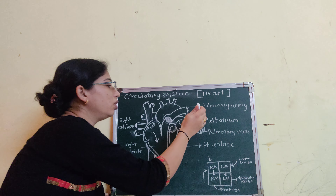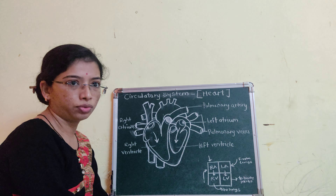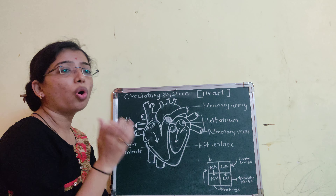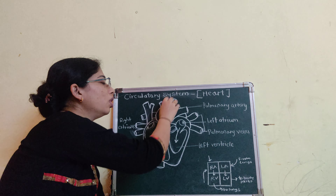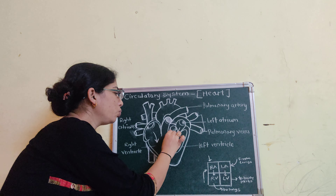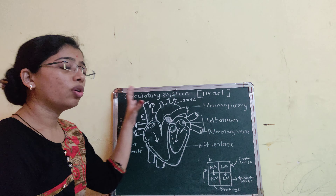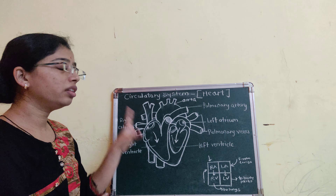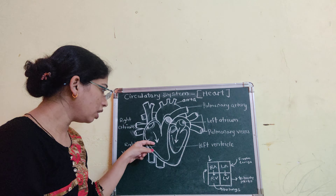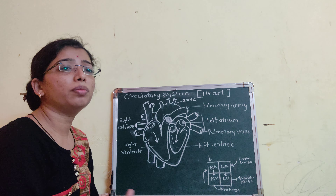The oxygenated blood enters into the left atrium through the pulmonary veins. At that time, the left atrium is relaxed. When the left atrium contracts, it transfers the oxygenated blood into the left ventricle. When the left ventricle contracts, it pumps out the oxygenated blood through the aorta to the body parts.